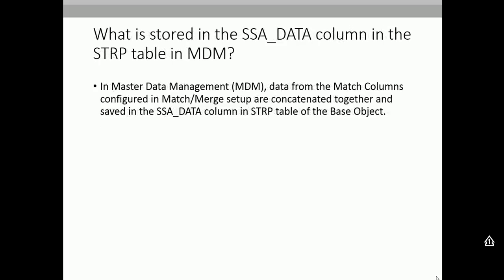What is stored in the SSC_DATA column in the STRP table in MDM? In MDM, data from the match columns configured in the match and merge setup are concatenated together. For example, if display name and address line 1 are match columns, the data for both is concatenated and saved in the SSC_DATA column in the STRP table. The STRP table has a column called SSC_KEY and SSC_DATA — SSC_KEY contains the key generated for that record, and SSC_DATA contains the actual concatenated data from the match columns.